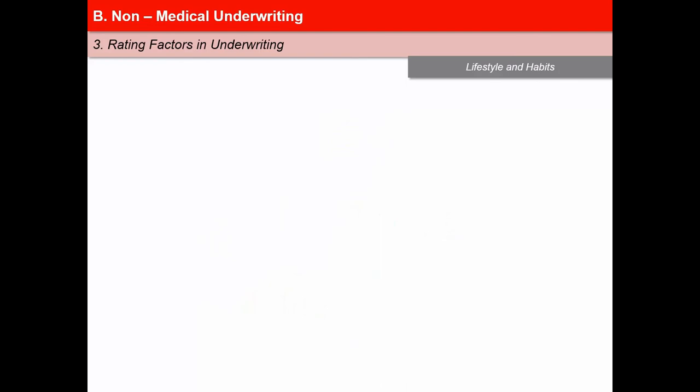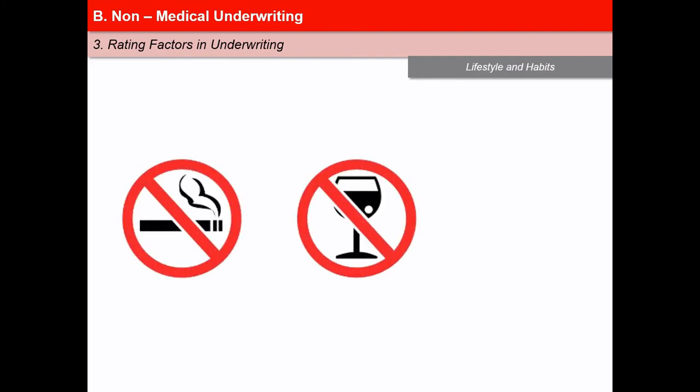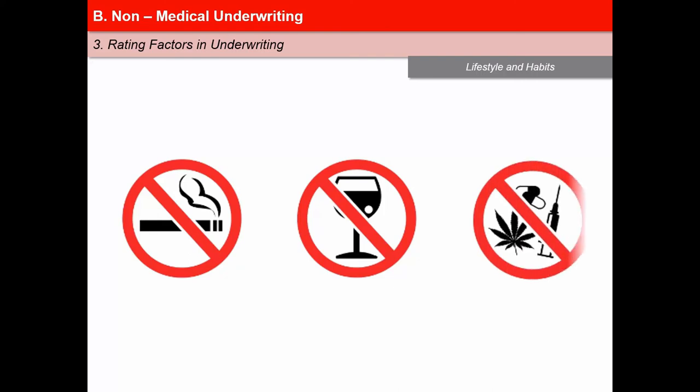Lifestyle and habits cover a wide range of individual characteristics — for example, smoking, drinking alcohol, and substance abuse like drugs or narcotics, sedatives, and other similar stimulants. Generally, the agent's confidential reports and moral hazard reports are expected to mention if any of these characteristics are present in the individual's lifestyle, suggesting exposure to risk.